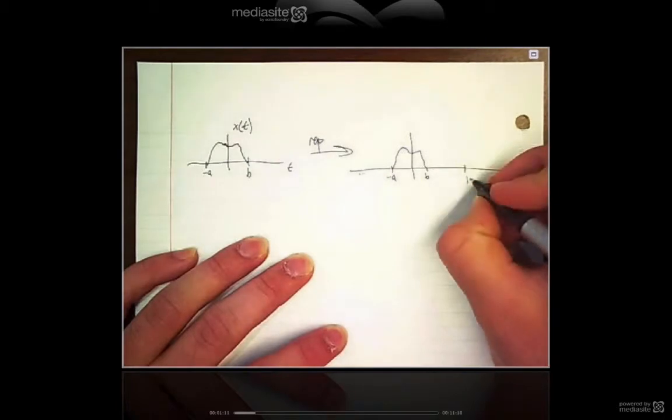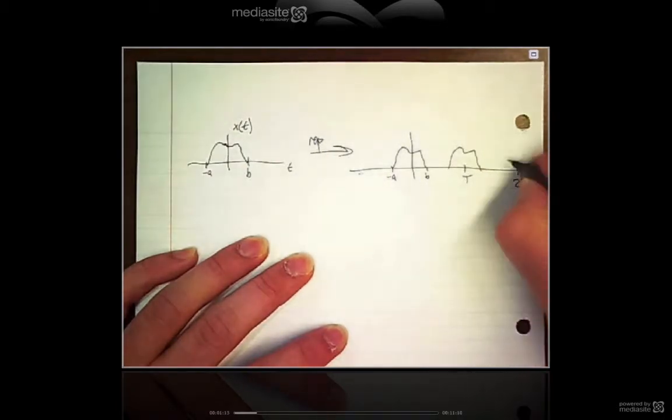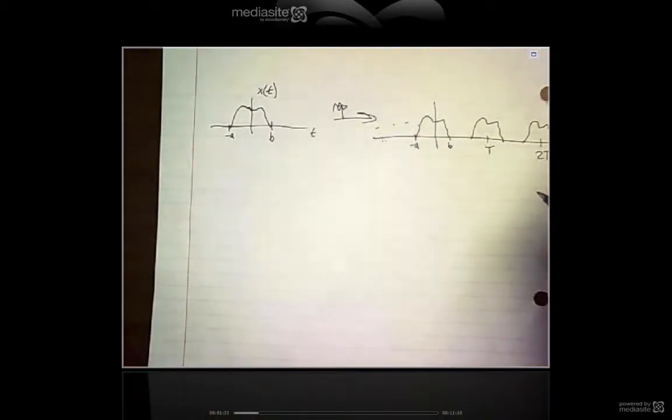You would have a copy at T, a copy at 2T, and so on. It's literally just multiplying your time domain signal by an impulse train so that it copies every T periods.